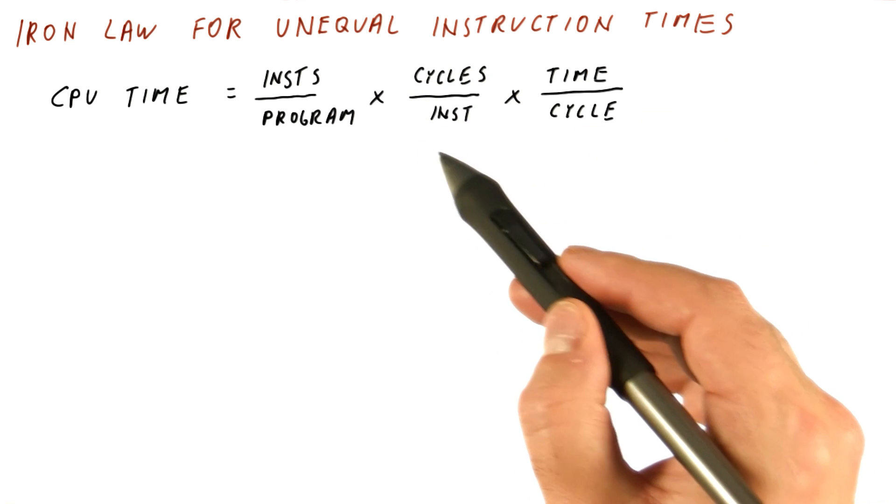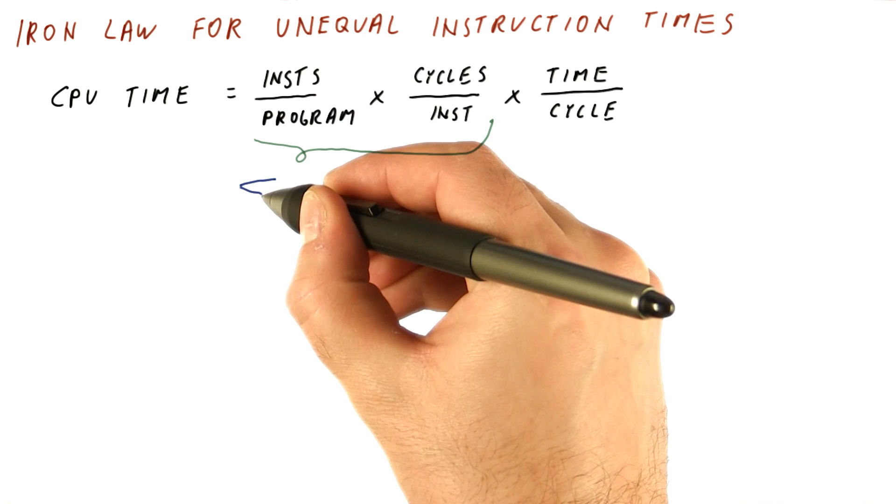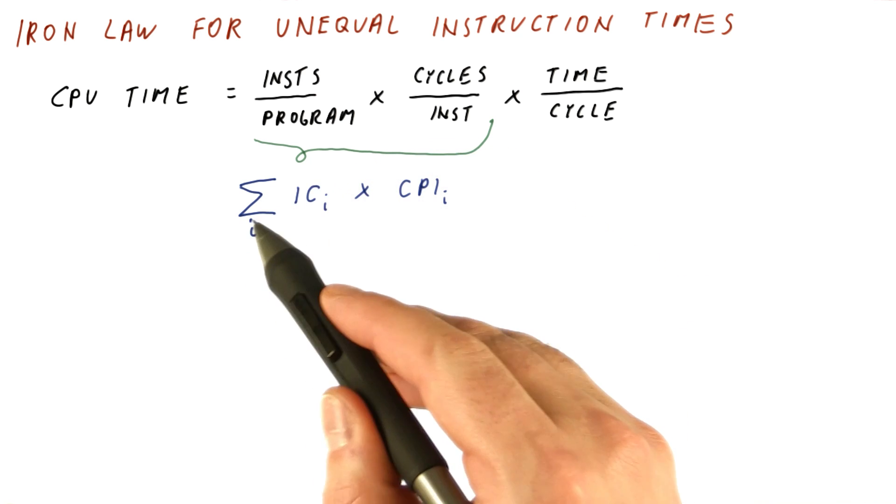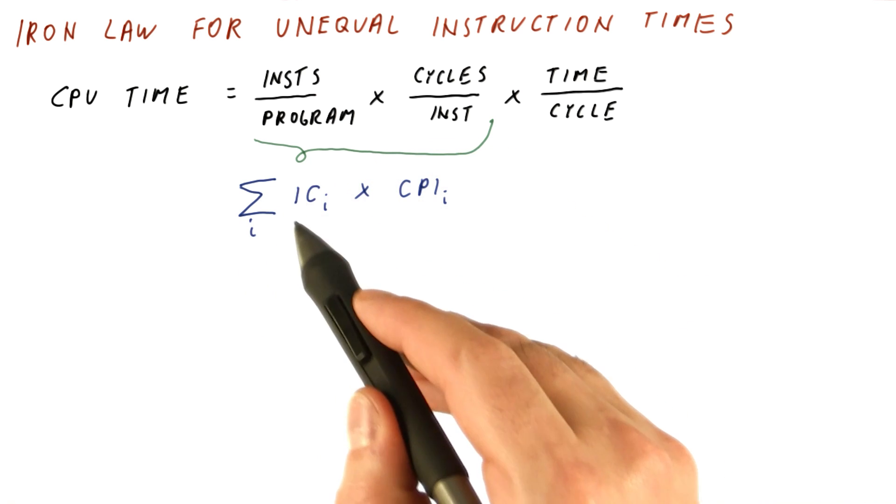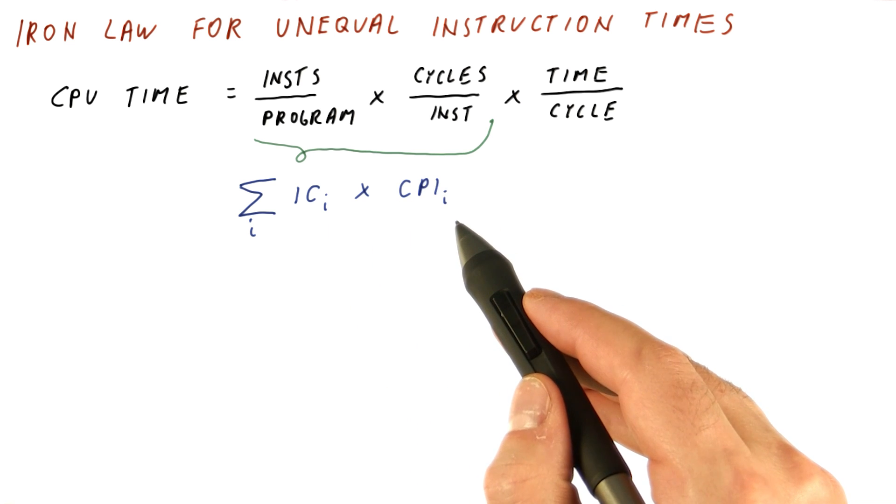If we have different clock cycles per instruction, this part becomes a sum for all types of instructions, the instruction count of that type that we have to execute, times the cycles per instruction for that type of instruction.